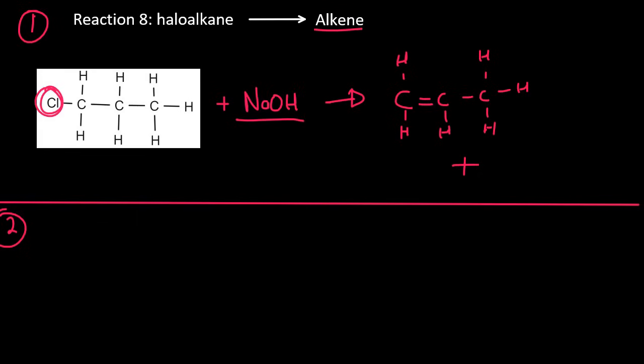But when you write this out, and you actually show this as a reactant, then this Cl is going to bond with that Na. And this H that we knocked off is going to bond with that. And so we're going to end up with NaCl as another product, and then H2O as the third product. So that's method one.